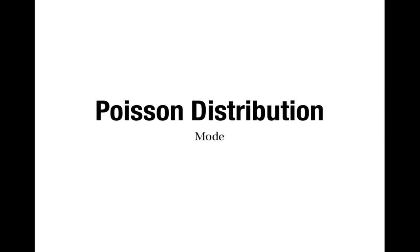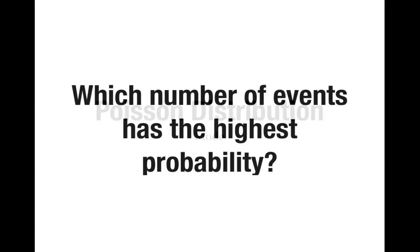This is a video about how to find the mode of a Poisson distribution. The mode will be the number of events which gives the highest probability. So the question is, which number of events gives the highest probability in a Poisson distribution?